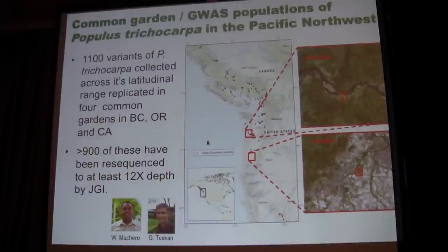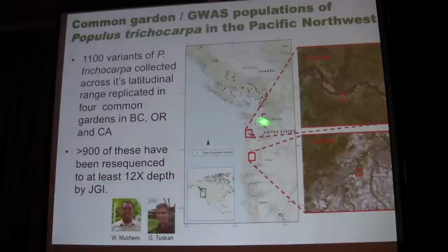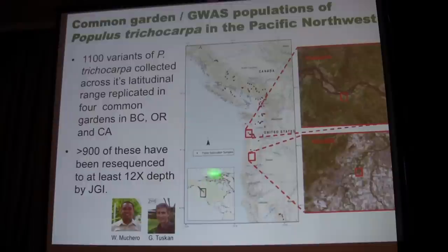We are now looking at common garden populations in the Pacific Northwest. These are a thousand different genotypic variants of Populus trichocarpa, collected several years ago by Jerry Tuscan's group, brought into common gardens, propagated, replicated, and established at four sites — we've just looked at two so far. These have been completely resequenced by JGI to at least 12x coverage, so here we have a chance to look at GWAS interactions with microbiome populations, which is very exciting.